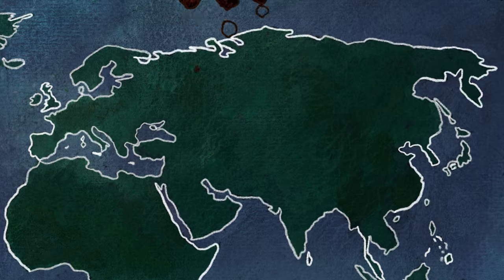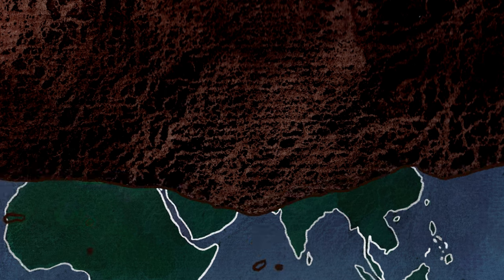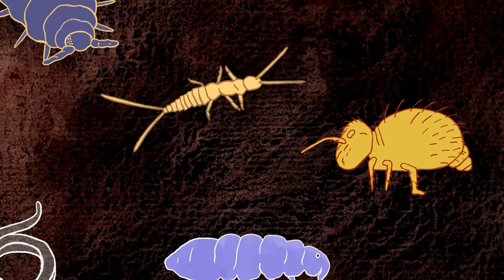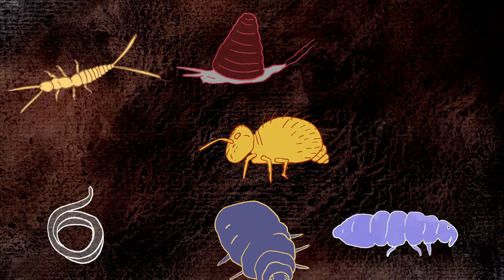Mycorrhizal mycelium is a sticky living seam that holds soil together. Remove the fungi, and the ground washes away. The carbon that floods into the soil through fungal channels supports intricate food webs. About 25% of the planet's species live underground.